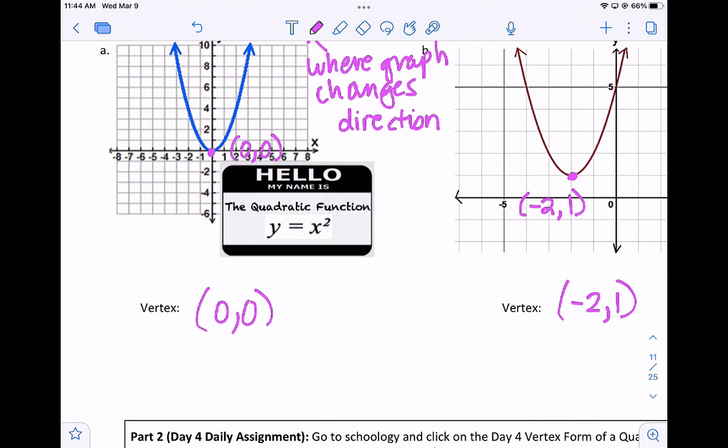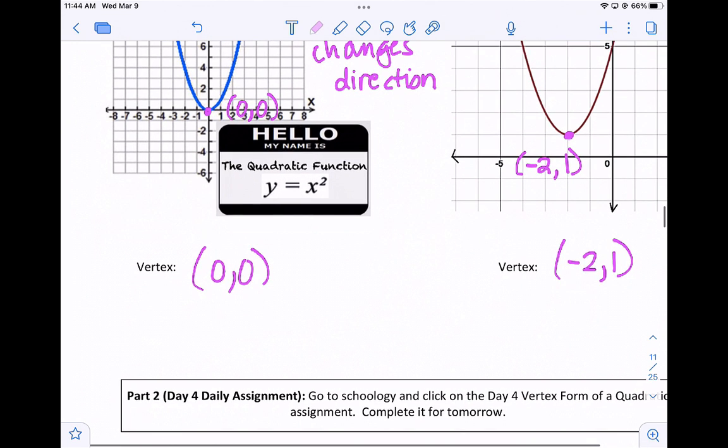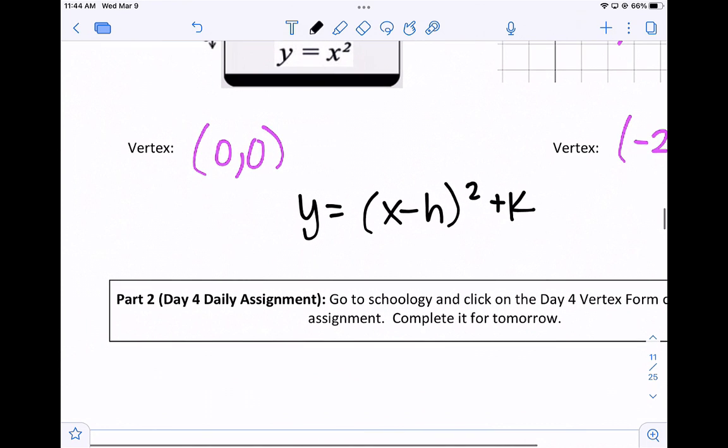If you remember in the functions unit, we talked about shifting the graph up, down, left, and right. And we wrote something if it was a quadratic in this form: y equals x minus h squared plus k. And we talked about the behavior of k and h. So one of these moves our graph left and right, and one of them moves it up and down.